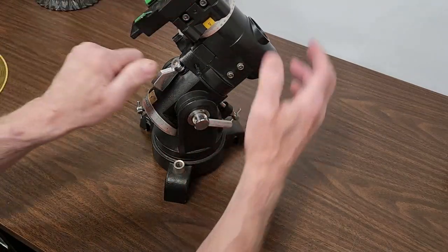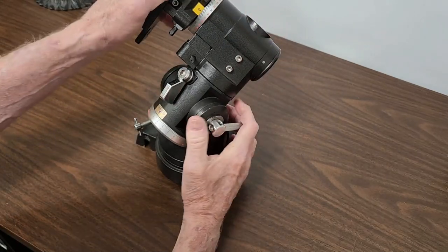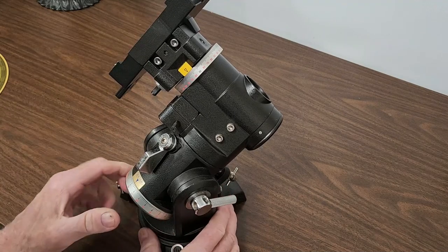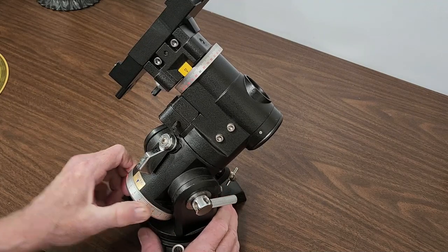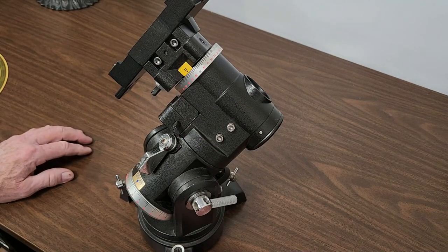I'm sure most of you are aware of how setting circles work on a telescope. Here we have a telescope with setting circles. Up here we have declination, down here we have right ascension.